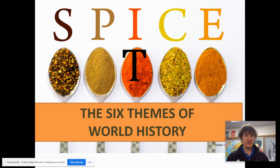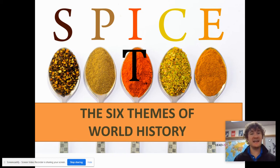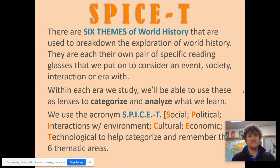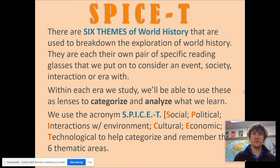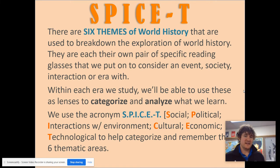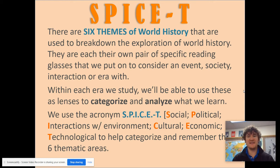SPICE-T is an acronym — each letter stands for a specific word. These are the six themes; this is a framework of thinking and organizing that we'll use in world history. The six themes are used to break down and explore world history, evidence, and ideas. They are each their own pair of specific glasses. Within each era, we'll be able to use these lenses, S-P-I-C-E-T, to categorize our thinking, group our thinking, and then analyze what we're learning.